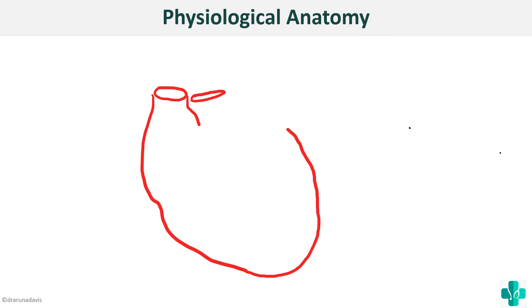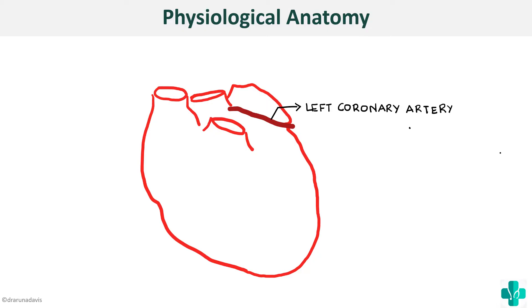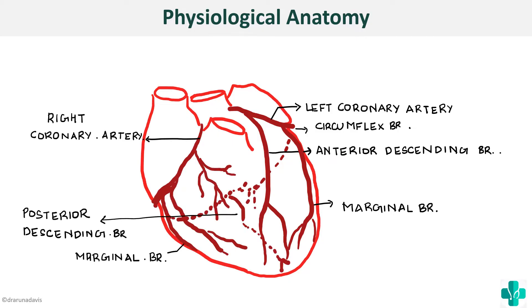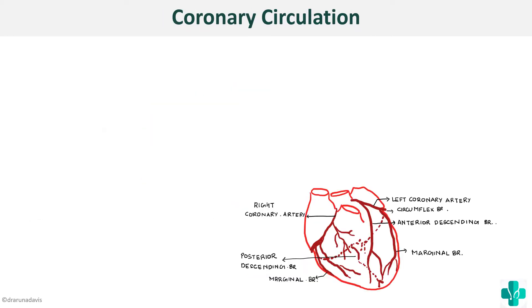We'll see how to approach this question for the exam. When such a question is asked, you can first write a very short physiological anatomy or depict it as a diagram. You can draw the outline of the heart and then draw the vessels supplying the heart — the coronary arteries. First we have the left coronary artery, with branches including the circumflex artery, the anterior descending, and the marginal branch. Next we have the right coronary artery, with branches including the posterior descending branch and the marginal branch.